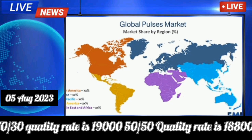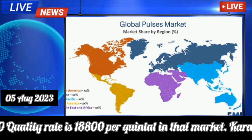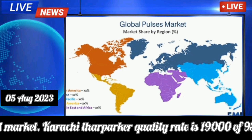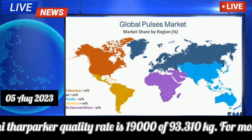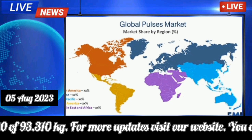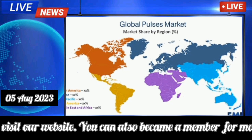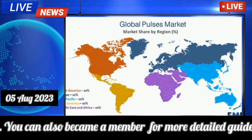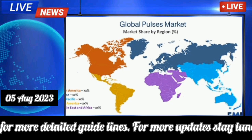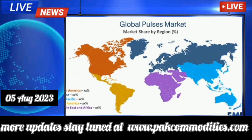Jowar seed: 80/20 quality rate is 19,270, 70/30 quality is 19,000, and 50/50 quality rate is 18,800 rupees per quintal. Karachi Tharparkar quality rate is 19,000 at 93.3 per kilogram. For more updates, visit our website and become a member for more detailed guidelines at www.parkcommodities.com.